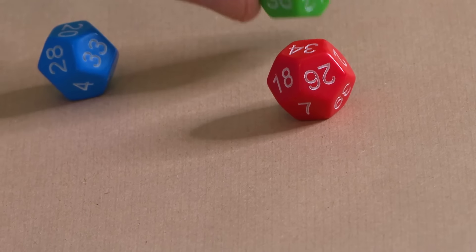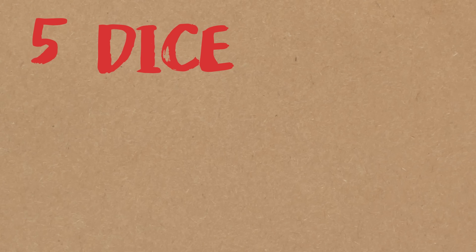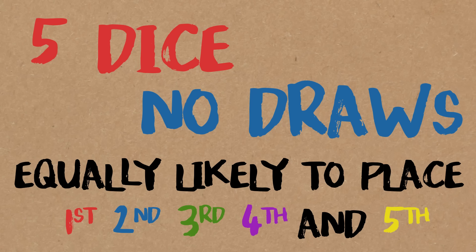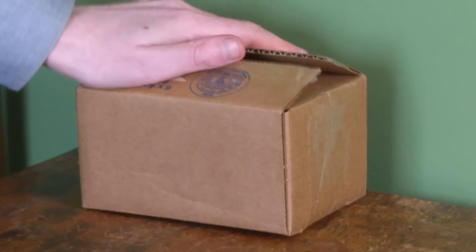So if you had three friends, they could pick any three of these dice and that would do the same thing. They would be equally likely to be first, second and third. Or if you had two friends, they could pick any two of these dice and you'd be equally likely to be first and second. Really nice. So the question then was, what's it going to look like for five players? Can we make a set of five dice, no draws, and you're equally likely to be first, second, third, fourth and fifth. That's the question we've got a new solution for.